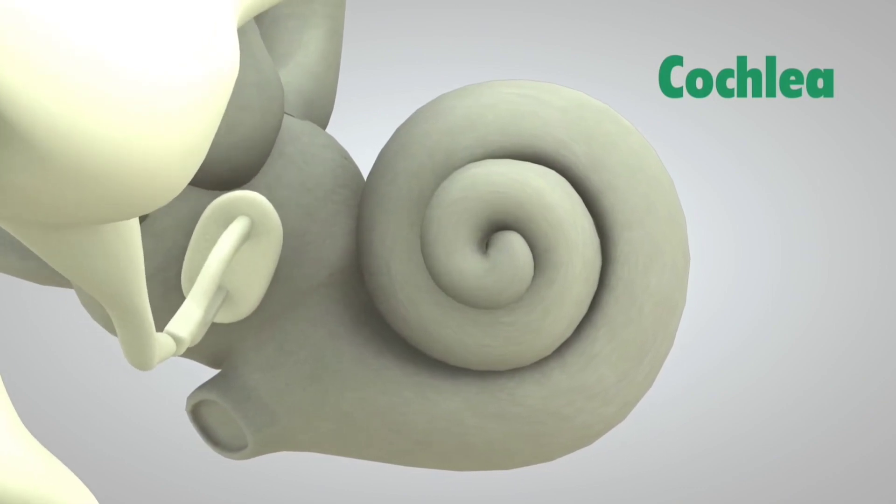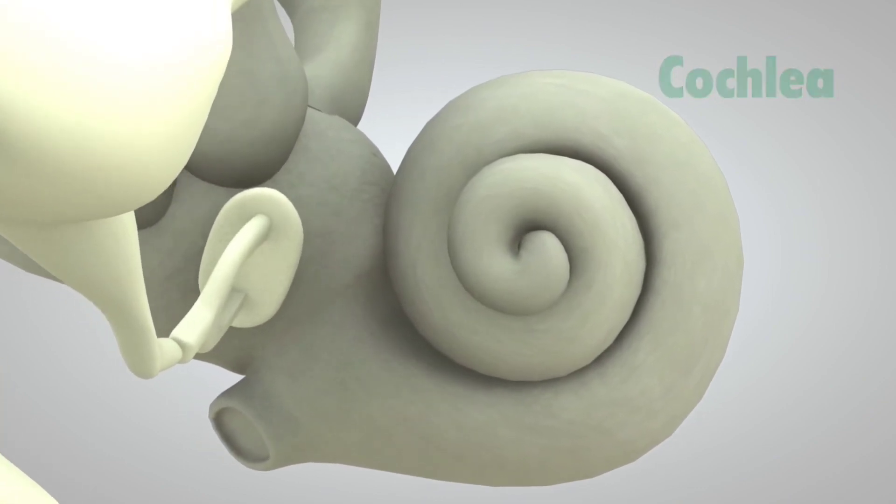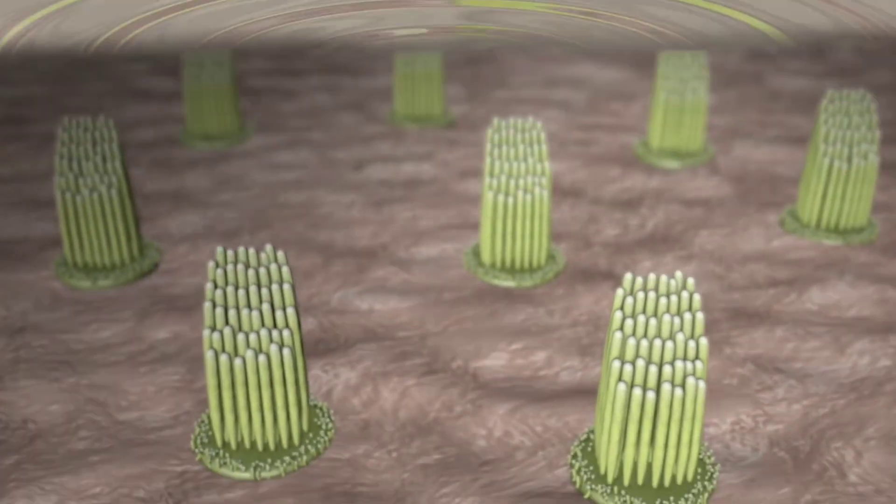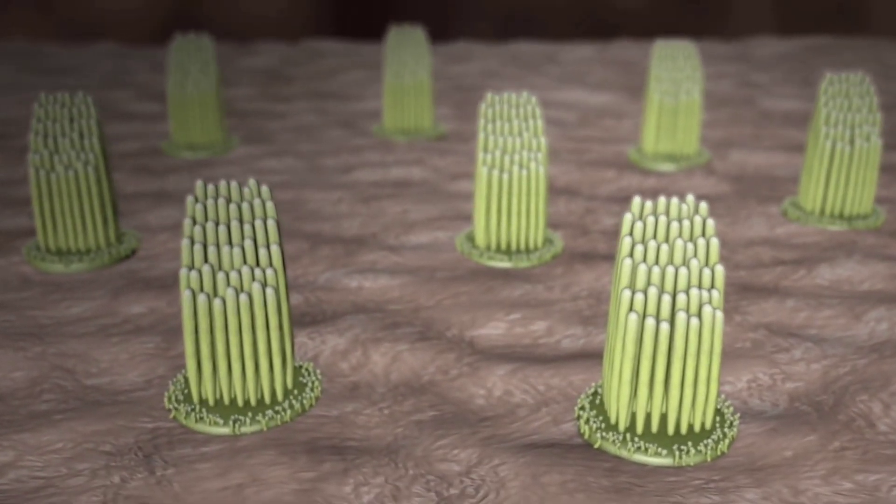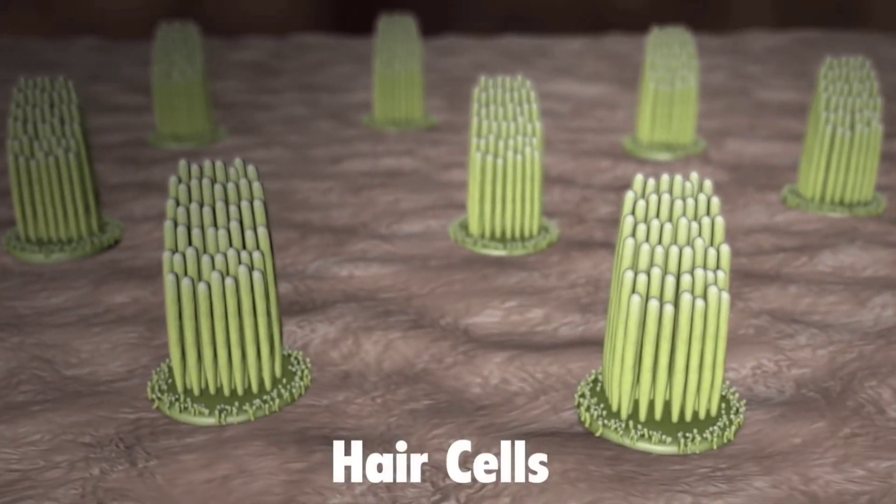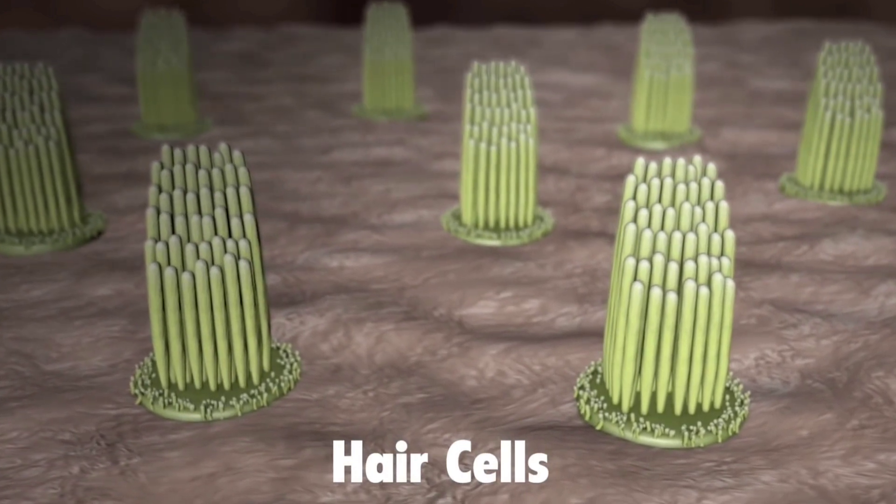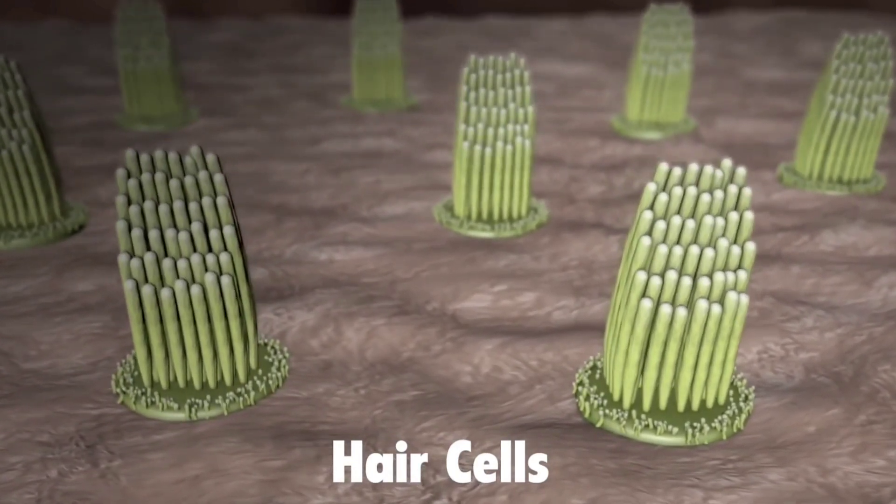The cochlea is shaped like a snail and is the size of a garden pea. It is filled with fluid, and the sound vibrations make this fluid ripple, which creates waves. Hair-like structures called stereocilia sit on top of hair cells.